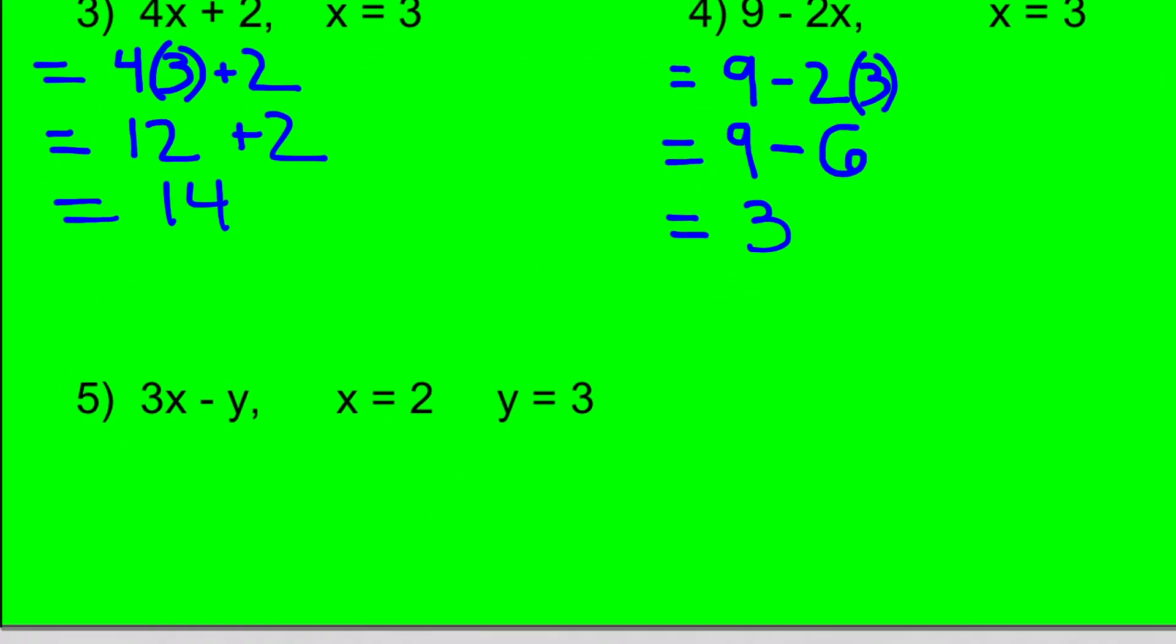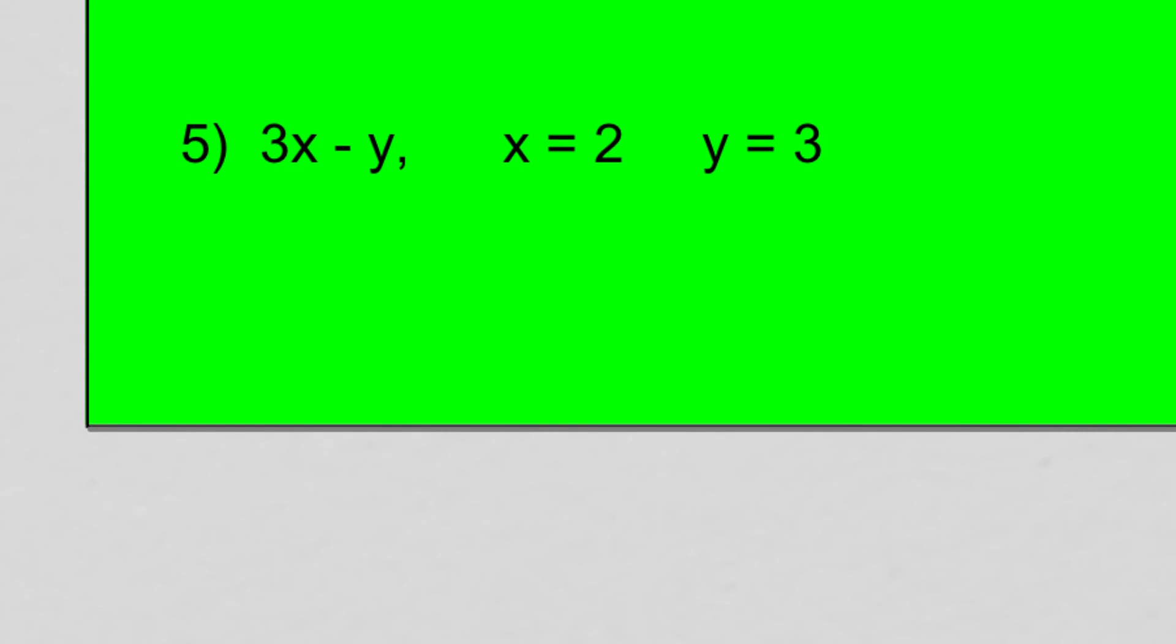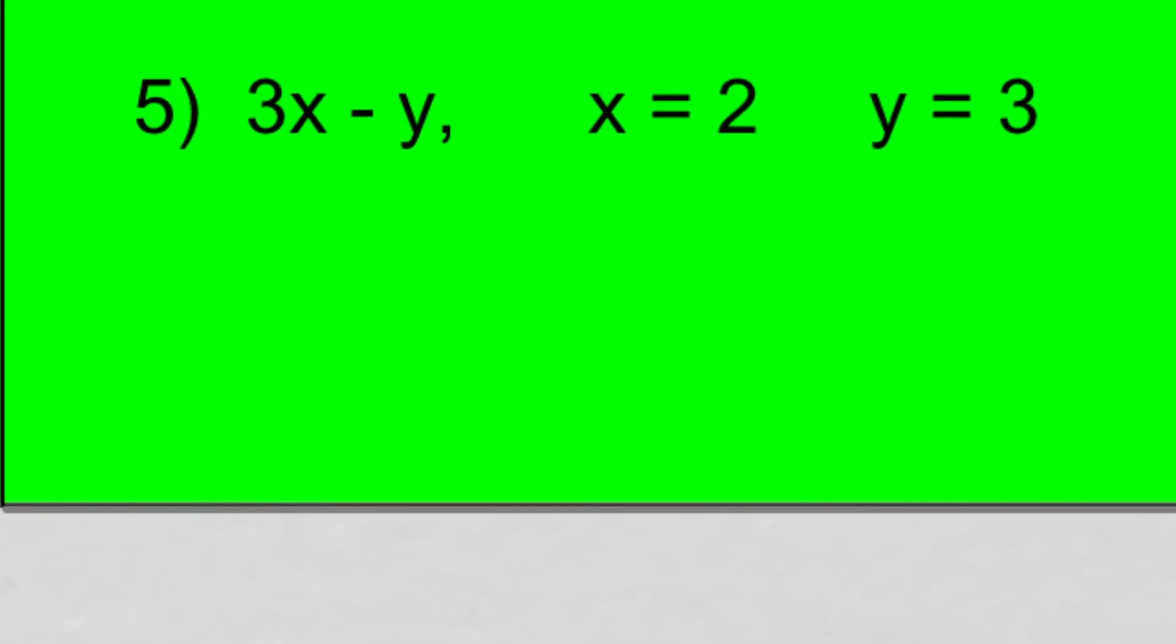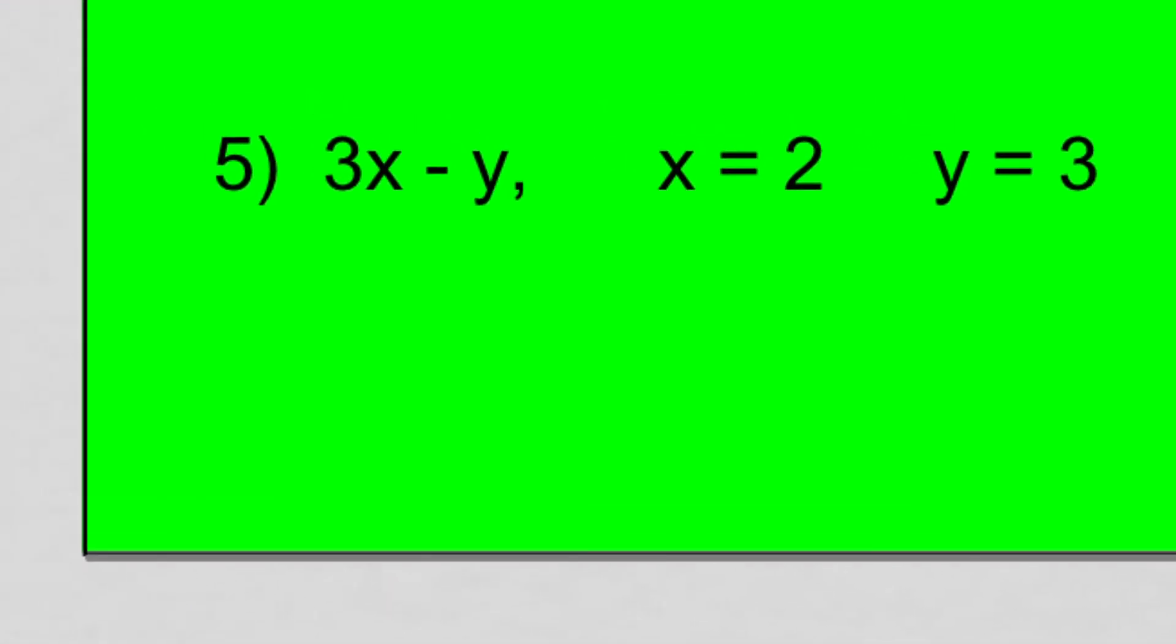Now look at this last one. It's got 2 variables, 2 unknown numbers. It's got an x and a y. So this means 3 multiplied by some unknown number minus another number. And in this case, the x is equal to 2. The y is equal to 3.